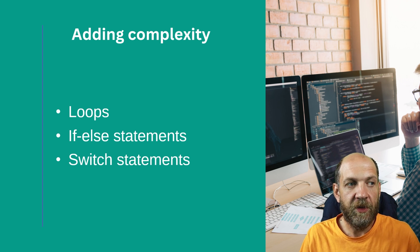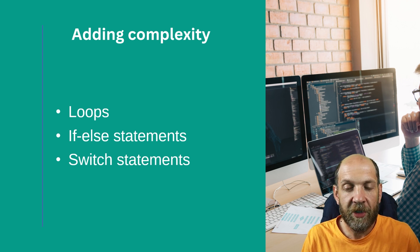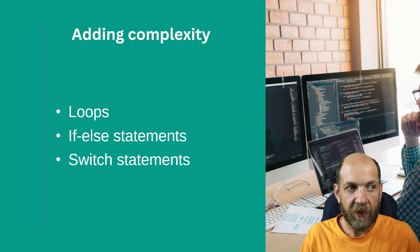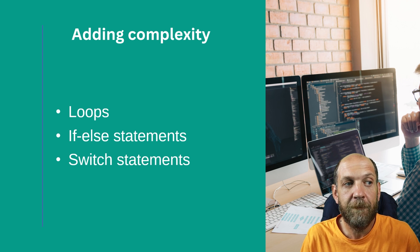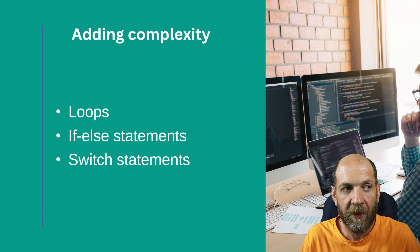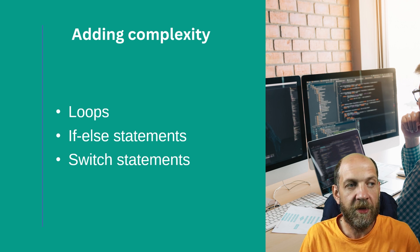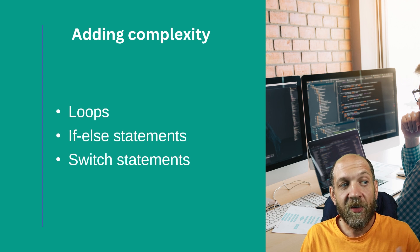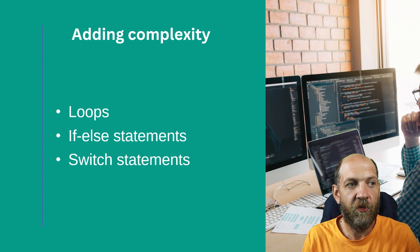It's about decision points and linear execution paths. Whenever we add a loop — whether it's a while loop, for loop, or for-each loop — we add cyclomatic complexity. Also whenever we use an if-else statement we add cyclomatic complexity. Be aware that ternary operators also add cyclomatic complexity because they still depend on decisions and execution paths taken based on a certain condition. This also applies to switch statements.